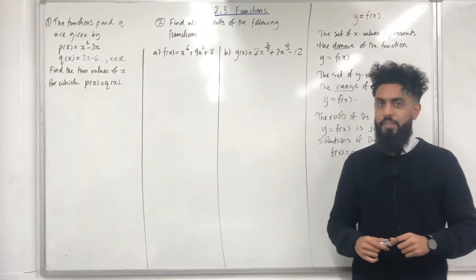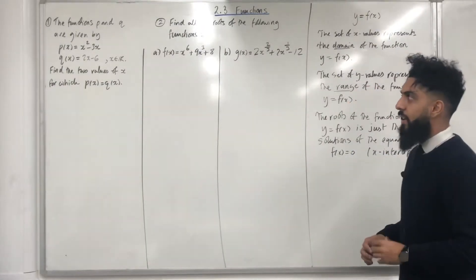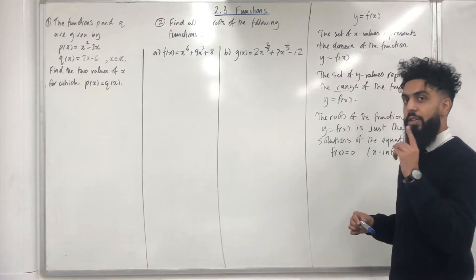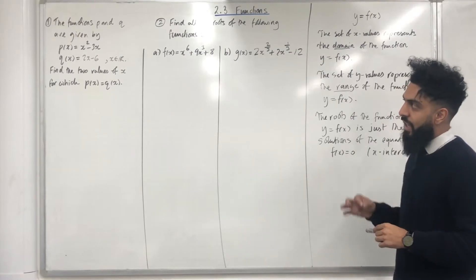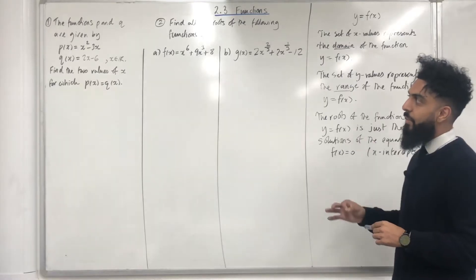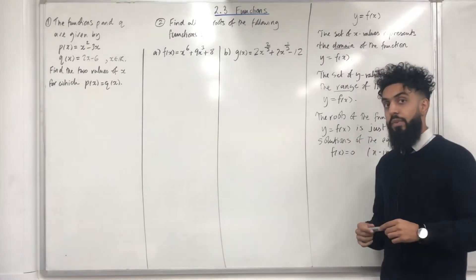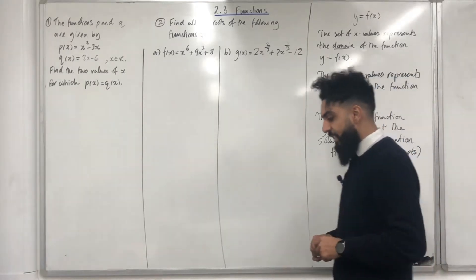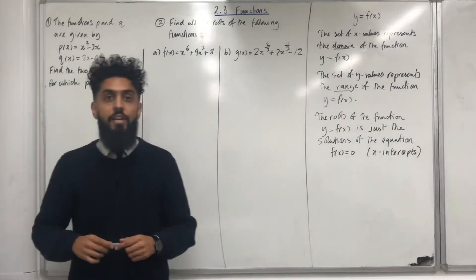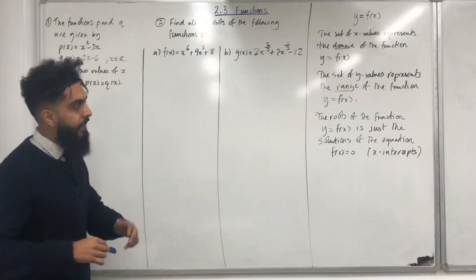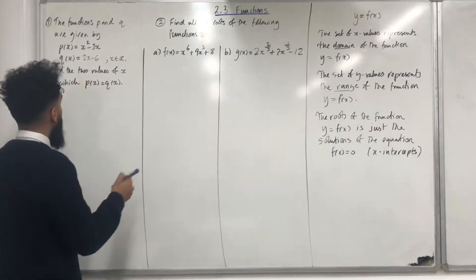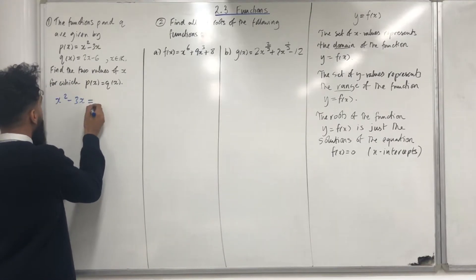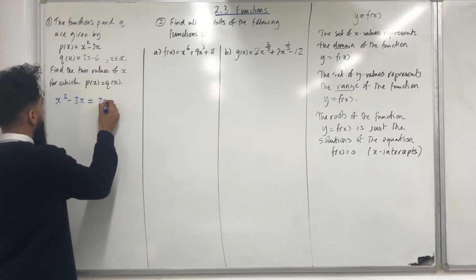Let's have a look at some examples. Example number one: the functions p and q are given by p of x is equal to x squared minus 3x, q of x is equal to 2x minus 6, x is an element of the real number set. Find the two values of x for which p of x is equal to q of x. The very first step is to set your p of x equal to your q of x. So, p of x is x squared minus 3x, set equal to q of x, which is 2x minus 6.